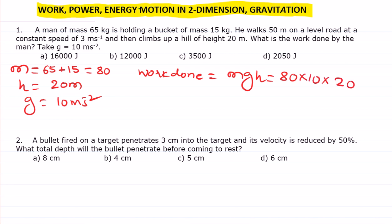So 8 into 2 is 16, one, two, three zeros, the unit is Joule. Okay, so as per the question, option a is the correct one.